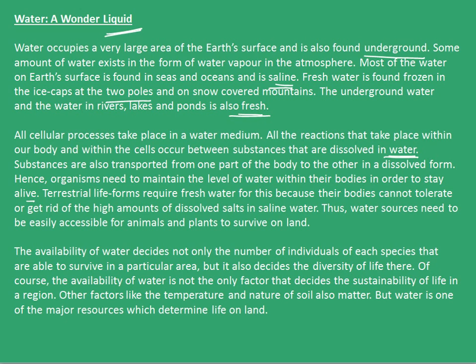Terrestrial life forms require fresh water because their bodies cannot tolerate or get rid of high amounts of dissolved salts and saline water. Hence, there is a need for easy access to water for animals and plants to survive on land. The availability of water decides not only the number of individuals of each species that are able to survive in a particular area, but it also decides the diversity of life there.